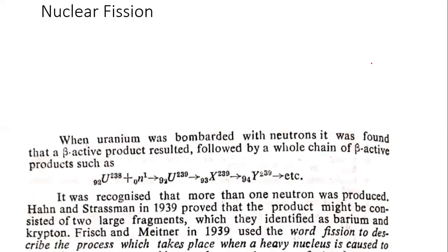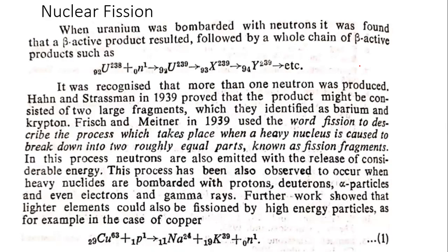In this class, we will discuss the historical background. When uranium was bombarded with neutrons, it was found that beta-active products resulted, followed by a whole chain of beta-reaction products. It was recognized that more than one neutron was produced. Hahn and Strassman in 1939 proved that the product might be consistent of two large fragments, which they identified as barium and krypton.